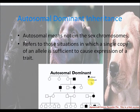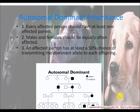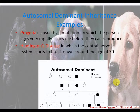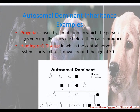The filled symbol is affected and the other is unaffected. Every affected person should have at least one affected parent. Males and females should be equally often affected. An affected person has at least a 50% chance of transferring the dominant allele to each child. An example is progeria, caused by a mutation in which the person ages very rapidly and dies before they can reproduce. Another example is Huntington's disease, in which the central nervous system starts to break down around the age of 30.